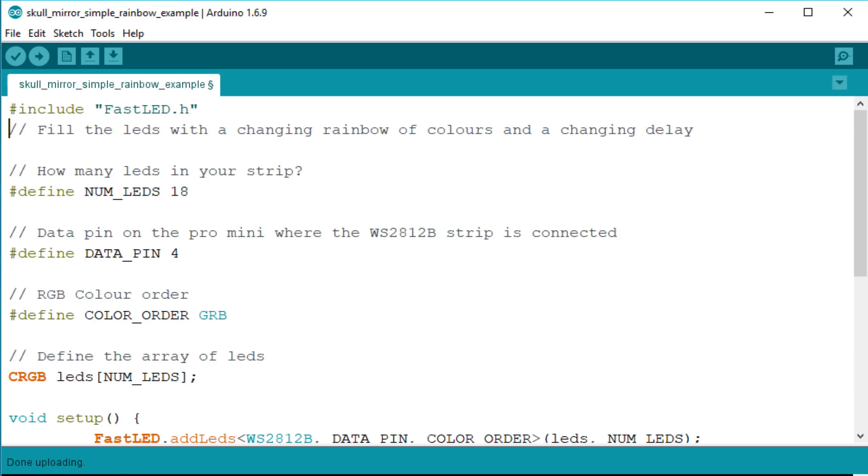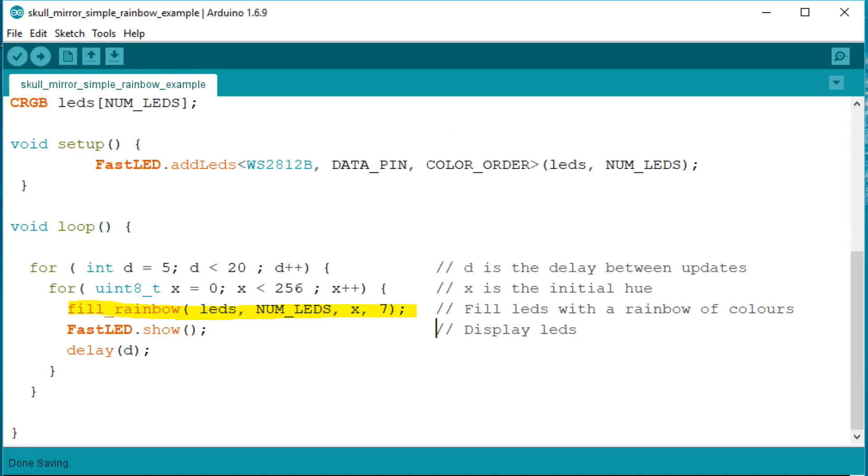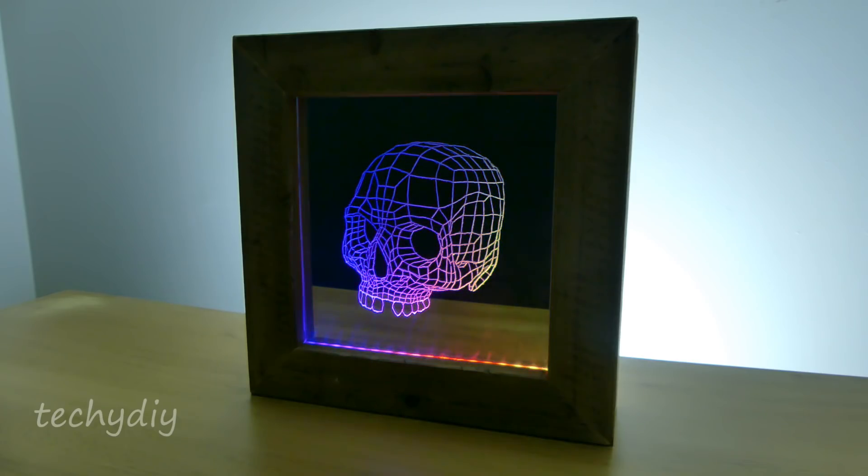Now let's have a look at a sketch that fills the LEDs with a rainbow effect. Once again we define the constants. Define the LED array. And add the LED strip. In the main body of the sketch we have the fill rainbow command. Which fills the LED strip with a rainbow of colors starting with an initial color hue. That command is surrounded by two for loops. The first increments the time delay between each iteration. And the second increments the initial starting hue. And this is the effect.